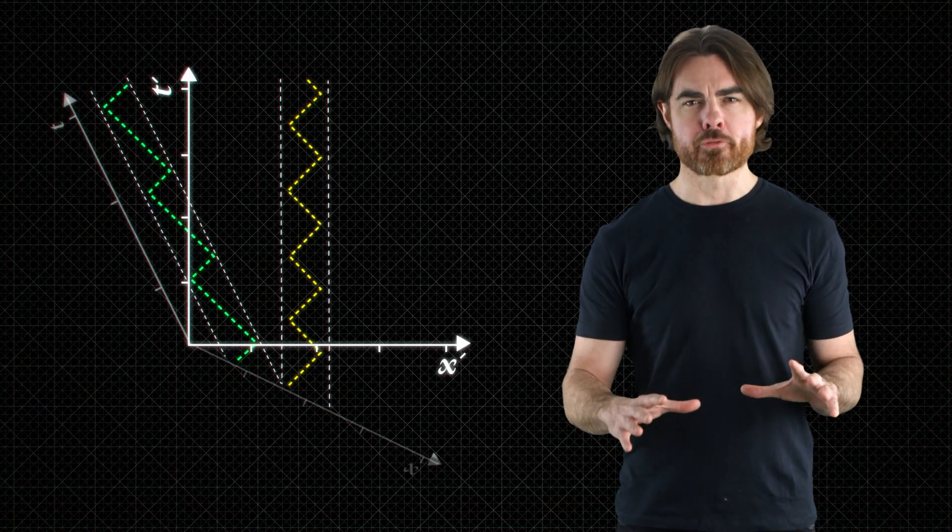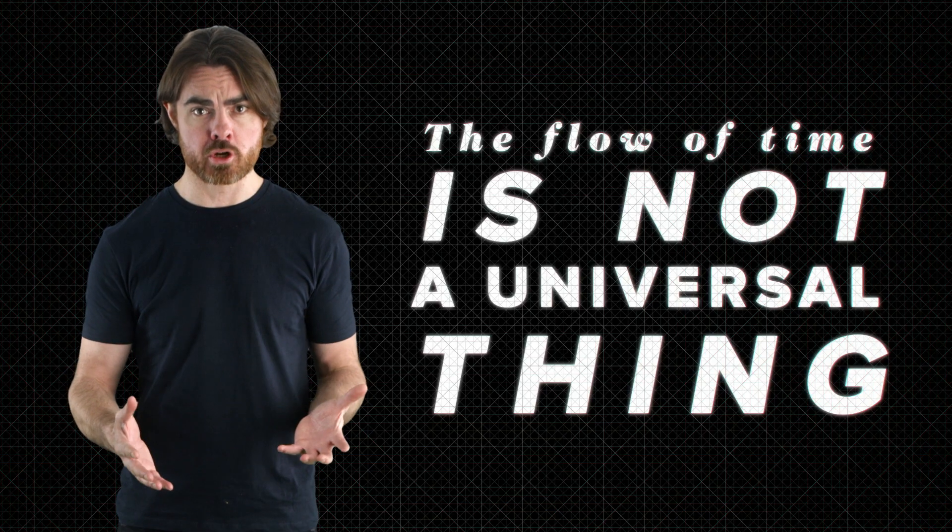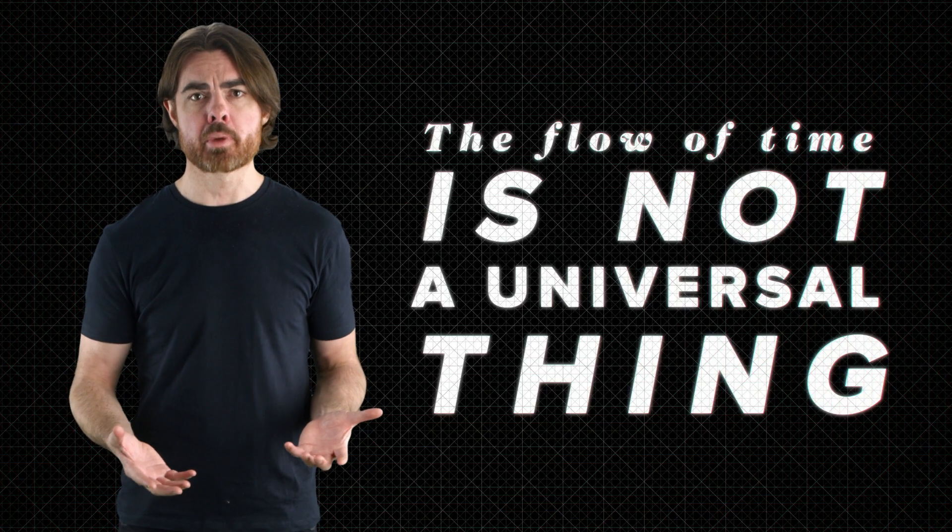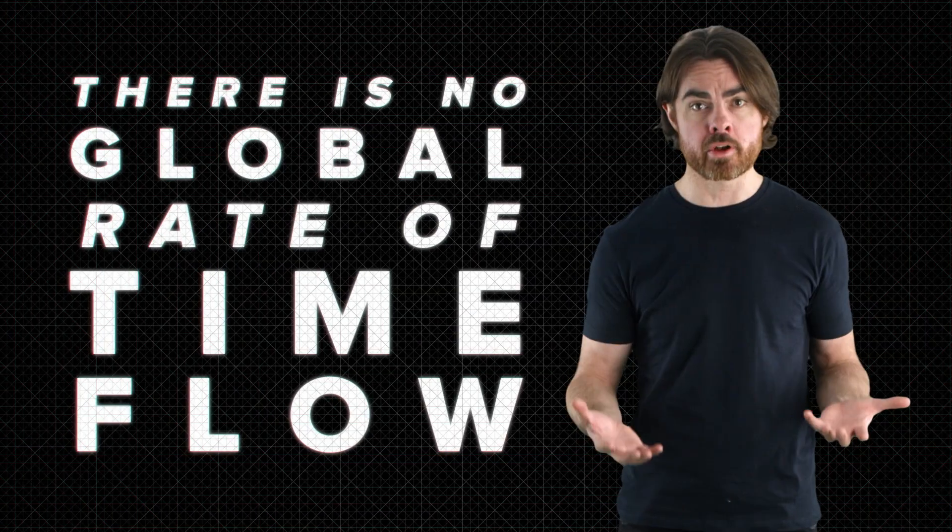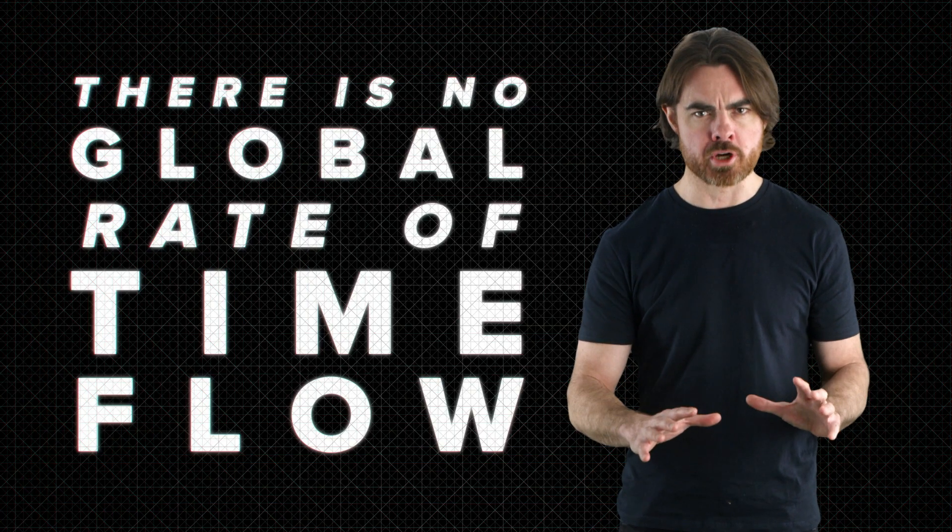This means that the flow of time is not a universal thing. It's defined locally for any observer, or indeed thing. But there's no global rate of time flow that everyone can agree on. What defines that local time flow? First, let's think more carefully about what these clock ticks really are.